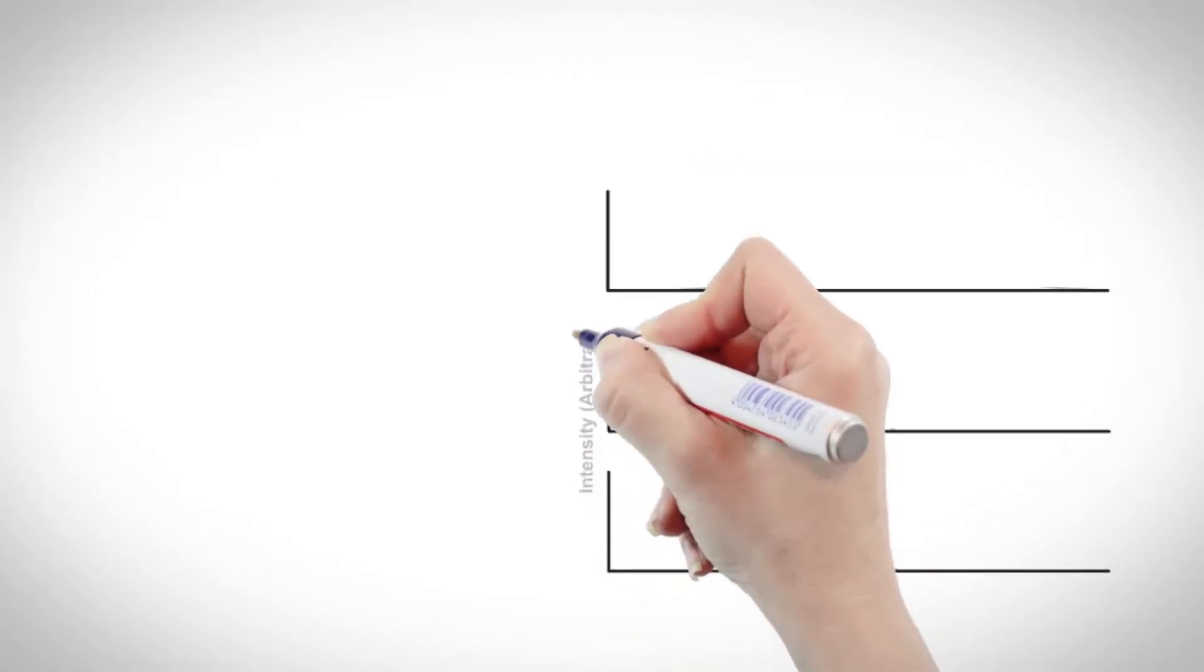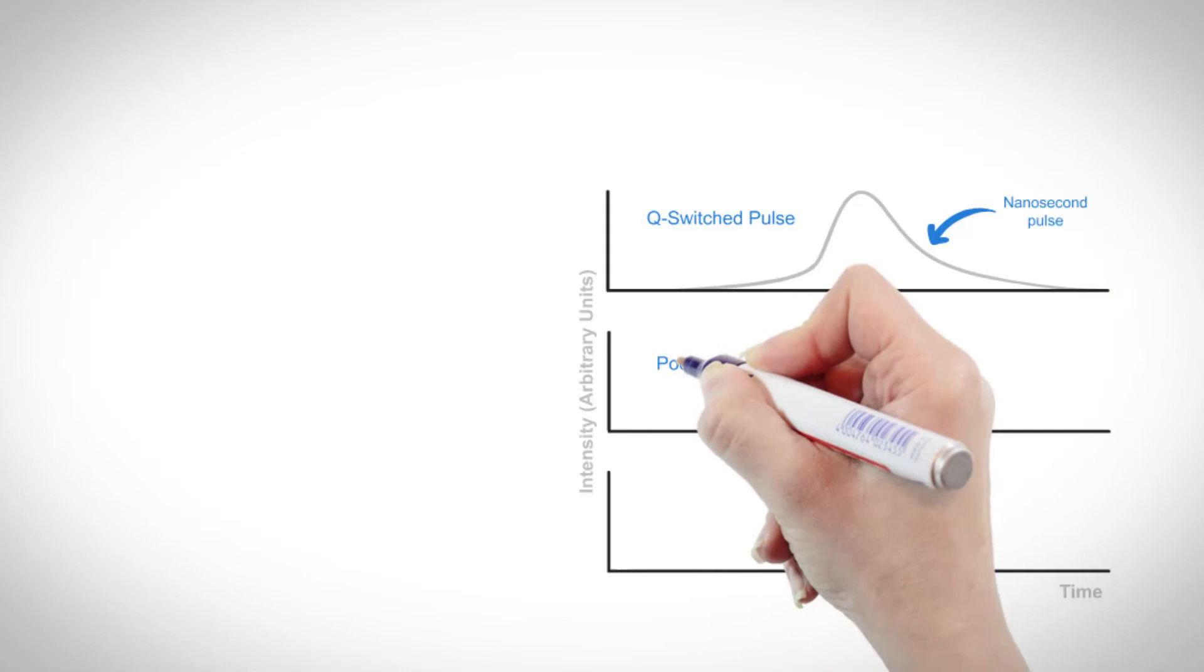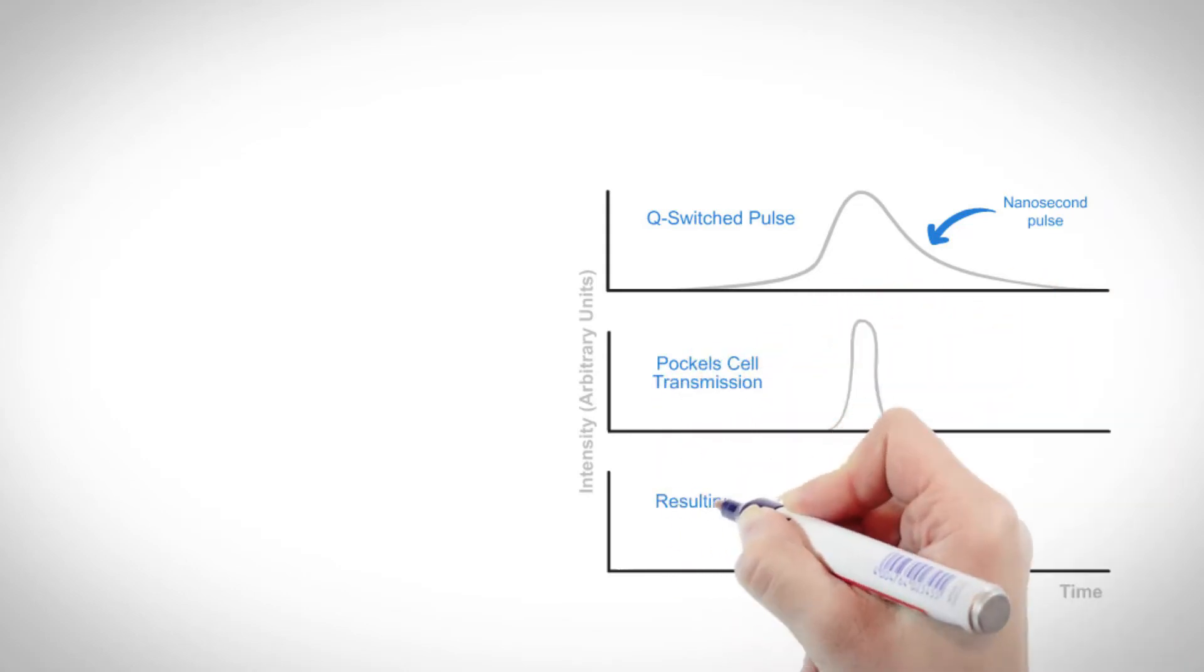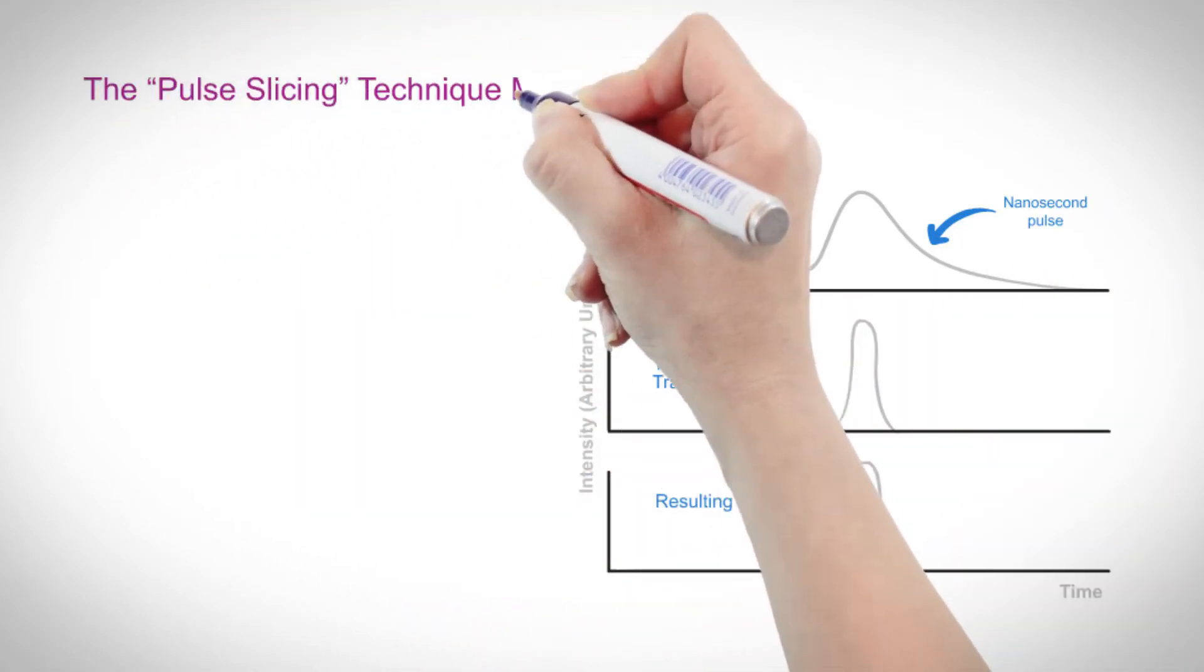But the peak power of a sliced pulse is the same as the Q-switched pulse from which it is derived, with no additional power benefit over the original nanosecond pulse.